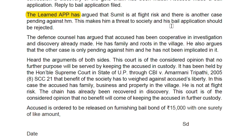Then you move to the arguments of the accused — why should he get bail? The defense counsel has argued that the accused has been cooperative in the investigation and the discovery has already been made. He has family and roots in the village. The defense also argues that the other case is only pending against him and he has not been implicated in it. So basically, the defense says: discovery is done, he is cooperative, there is no flight risk, he has family and ties, and in the other pending case he is not implicated.